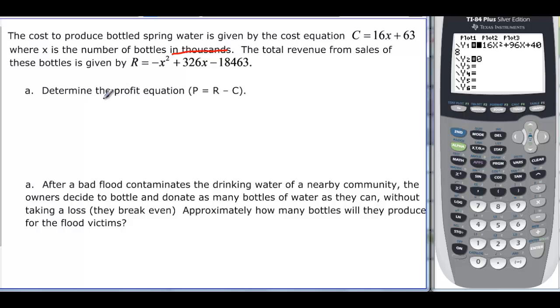Well, profit is revenue, which is negative x squared plus 326x minus 18,463, minus the cost equation, which is 16x plus 63. But remember, this is going to be now minus 16x and minus 63.